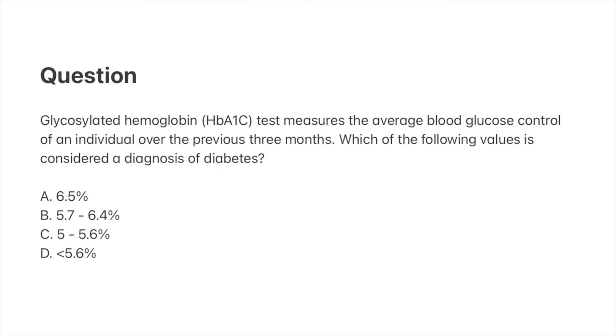That's why it's very important to treat diabetes early on. To conclude, I would like to ask you a question. The glycosylated hemoglobin test measures the average blood glucose control over the previous three months. Which of the following values is considered a diagnosis of diabetes? I'll give you a few seconds to think about the right answer.